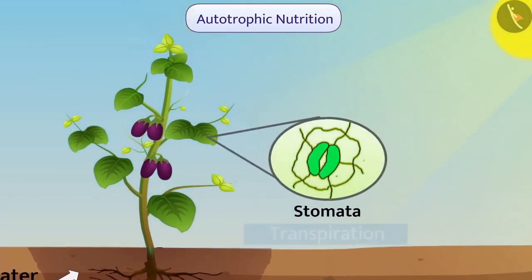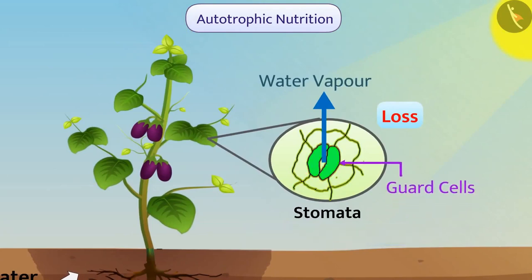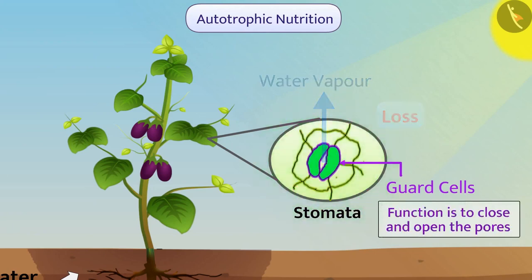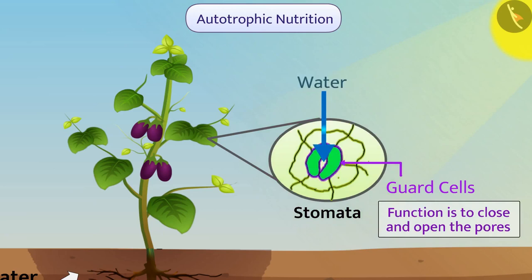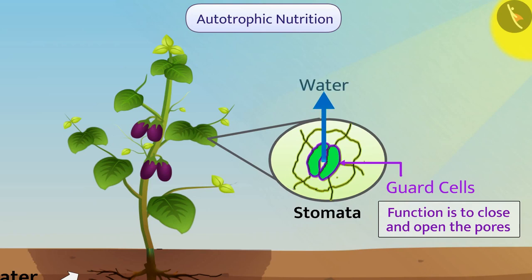The pores of stomata cause a significant amount of water loss in the form of water vapour. To prevent this, there are guard cells around the pores of stomata whose function is to close and open the pores. When water enters inside the guard cell, they swell and the stomatal pores open. In the same way, when water comes out of the guard cell, they shrink and the stomatal pores are closed.